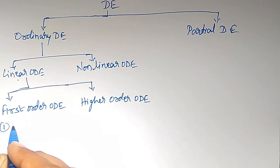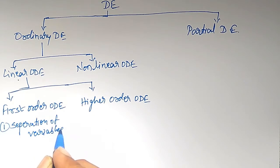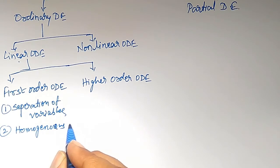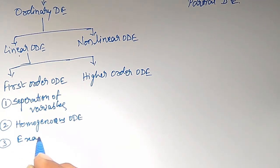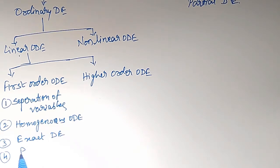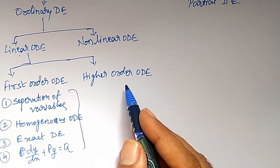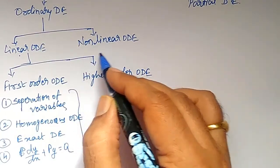The methods are: first, separation of variables method; second, homogeneous ODE — ordinary differential equations of first order, first degree; and these two were discussed in PUC 2. Third is exact differential equations, and fourth is linear differential equations of the type dy/dx plus P times y equals Q type. These four types of solution methods were discussed. Also, nonlinear differential equations — soluble for P — Clairaut's form and related things were discussed.